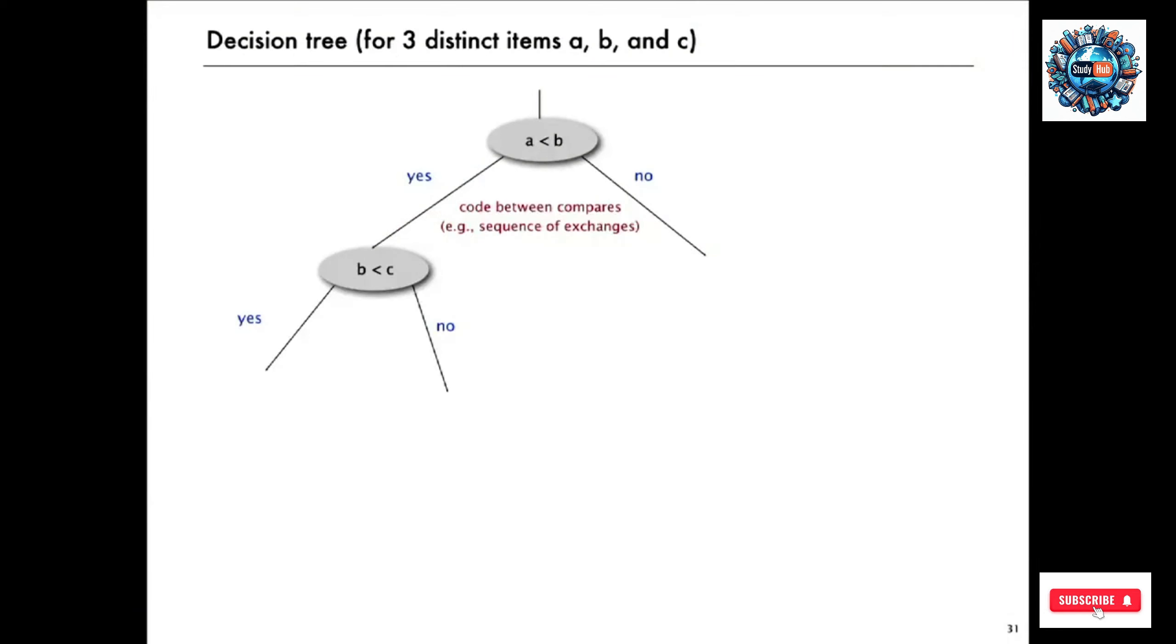If A is less than B, maybe the next compare is B against C. And if you find that B is less than C and A is less than B, then any algorithm that does that knows that the items are in the order A, B, C. If B less than C goes the other way, then it takes another comparison to determine the order. In this case, if C is less than B and A is less than C, then those three compares show that the order has to be A, C, B.